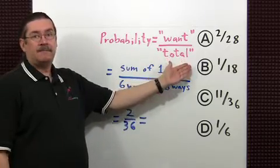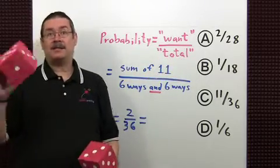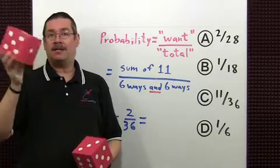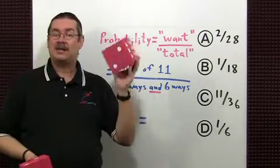What are the total number of possibilities? Well, there are six ways of getting any number on one die and six ways on the other.